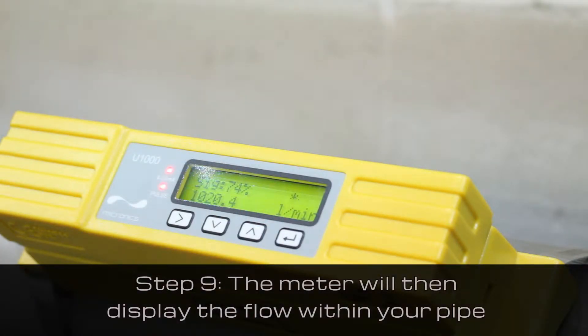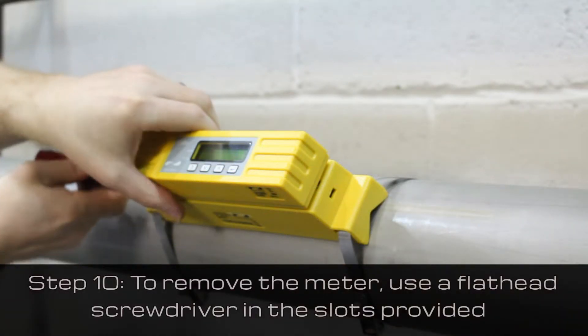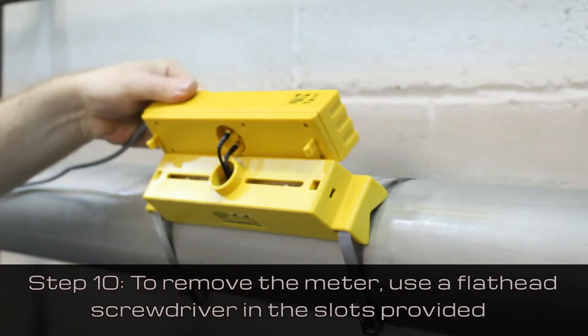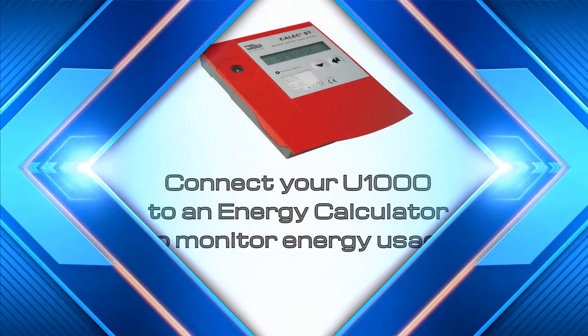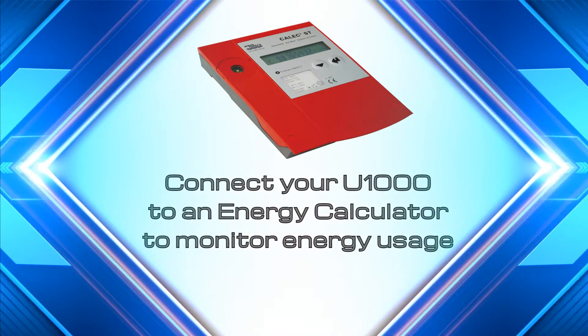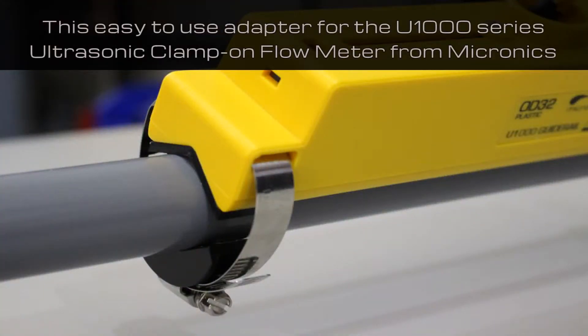To remove the meter from the guide rail, simply use a flathead screwdriver in the slots provided. You can also connect this meter to an energy calculator to monitor energy usage.